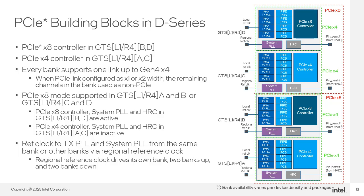For example, if banks A and B are combined to support a by-eight link, then only the PCIe by-eight controller in bank B is active for PCIe. The system PLL and hard reset controller in bank B are also active. The by-four controller in bank A is inactive, along with its system PLL and hard reset controller. Like in the E-series, each bank also has its own system PLL, reference clock, and reset control. However, reference clocks for the system PLL and TX PLLs can come from other different banks using a built-in regional reference clock line.